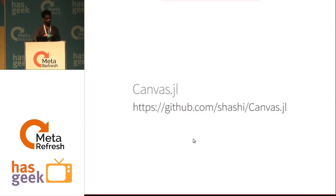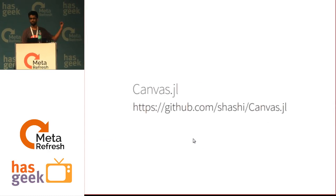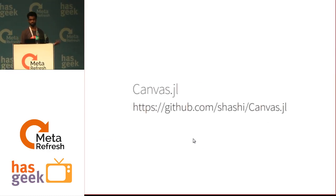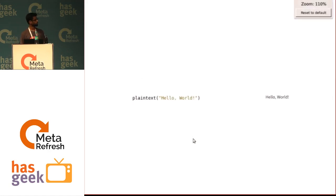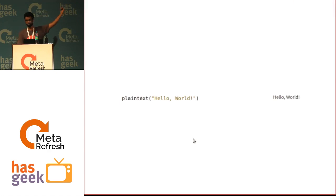The UI framework is called Canvas. It's a convention in Julia to suffix everything with .jl, so you can find it on my GitHub page. So what is a UI? My claim is that a UI is just a function applied to some data. Here's a hello world example — plain text is my UI function, I pass it the data 'hello world', and I get that as output: hello world.